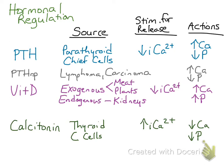So, there you have it. The main regulators of calcium and phosphorus are PTH, vitamin D, and calcitonin. And then, in some types of neoplasms, you can also have production and release of PTHRP.